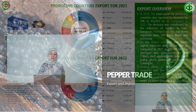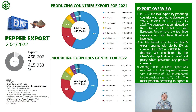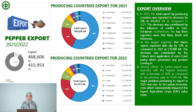In terms of pepper trade — export and import — for the export overview in 2022, total exports by producing countries decreased by 11% to 415,953 metric tons as compared to 2021. The decrease was contributed by the conflict in Eastern Europe. The top three exporters were Vietnam, Brazil, and Indonesia. As the largest exporter, Vietnam's exports decreased by 12% as compared to 2021, at 231,988 metric tons, largely due to China's strict zero-COVID policy which prevented products from coming in. Sri Lanka reported the highest decrease among exporters, with a decline of 36% to 11,416 metric tons.